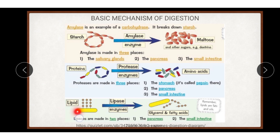Now, lipases. Lipase enzymes break lipids into glycerol and fatty acids. And nucleases: deoxyribonuclease and ribonuclease split DNA and RNA into deoxyribonucleotides and ribonucleotides respectively. Nucleotidases convert nucleotides into nucleosides and inorganic phosphate. Nucleosidases split nucleosides into nitrogen bases and pentose sugar.